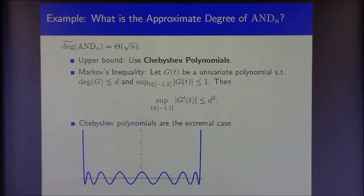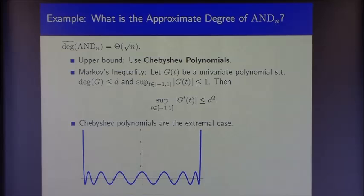Markov's inequality from approximation theory — not to be confused with Markov's inequality from probability theory — states: let g be a univariate polynomial of degree at most d, bounded in absolute value by 1 on the unit interval. Then the derivative of g at all points in the unit interval is itself bounded by at most the square of the degree. The Chebyshev polynomials are exactly extremal for Markov's inequality. I've drawn here the Chebyshev polynomial of degree 16, which has very large derivatives — a big jump at the endpoints of the unit interval.